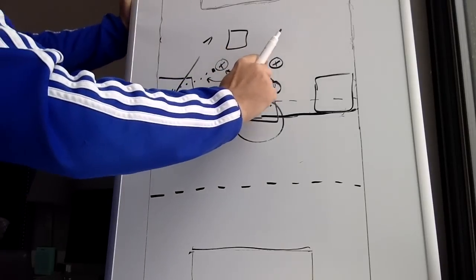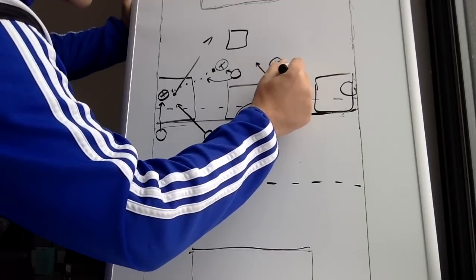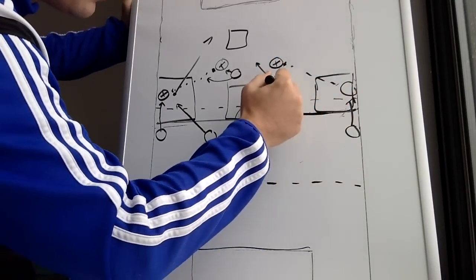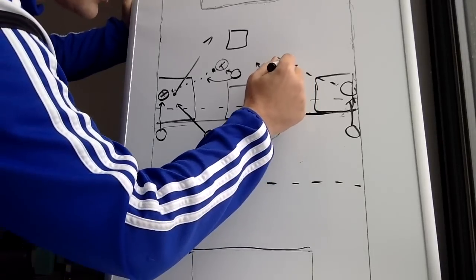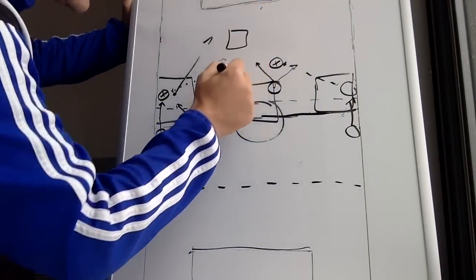So center backs, we force. If we force them this direction again, this center back has the ball. We force them to play here. Our winger shuts down there. Center back, our forward shuts down a back pass. The other forward can stay high and look to counter.